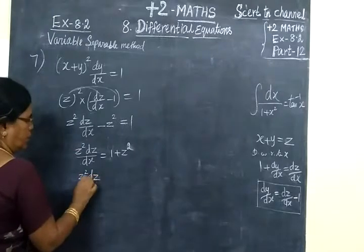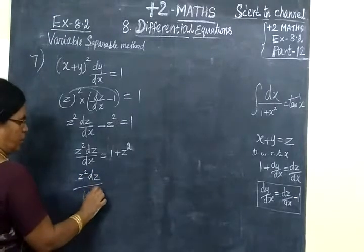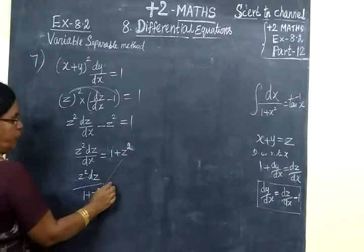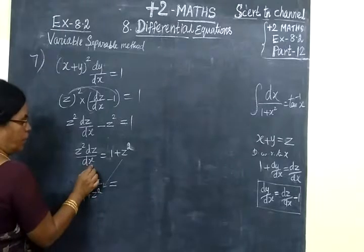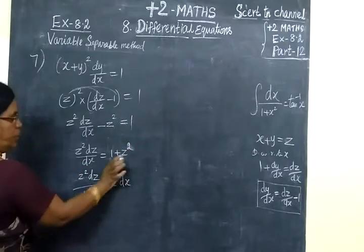Separating variables: z²/(1+z²) dz = dx. The z² goes to the numerator, and the denominator (1+z²) stays in the denominator. So we have z²dz/(1+z²) = dx.